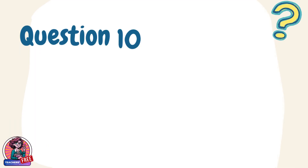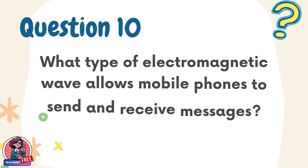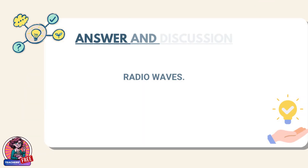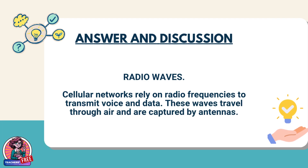Question 10. What type of electromagnetic wave allows mobile phones to send and receive messages? Answer: radio waves. Cellular networks rely on radio frequencies to transmit voice and data. These waves travel through air and are captured by antennas.